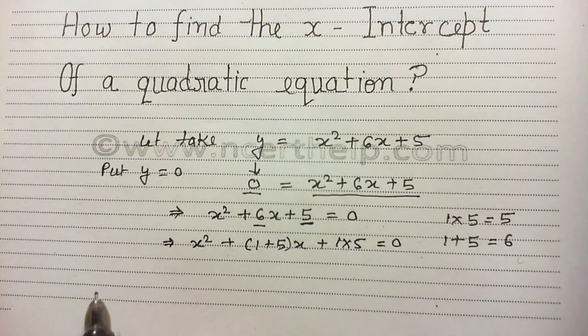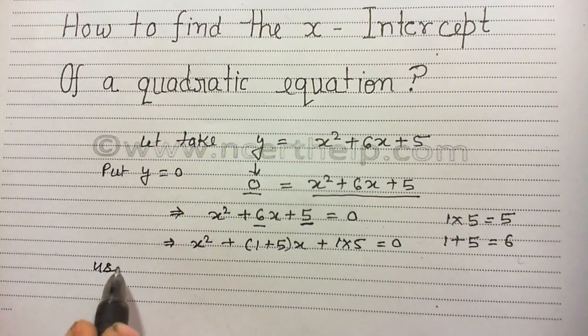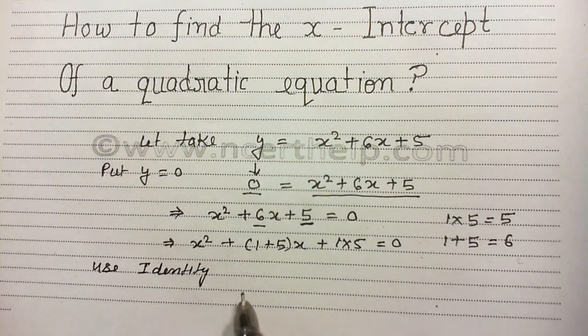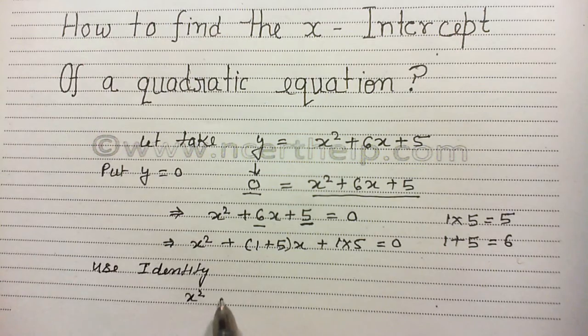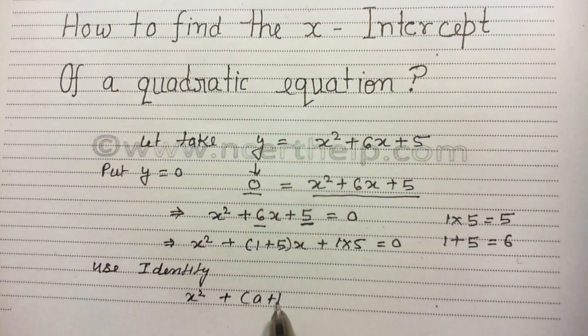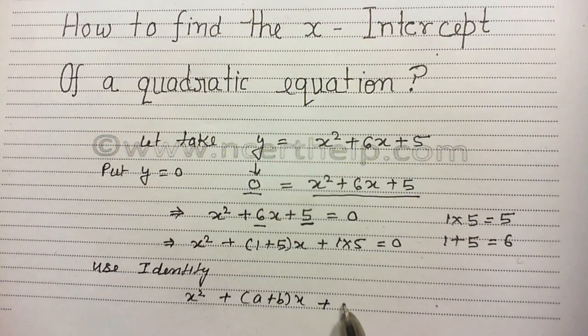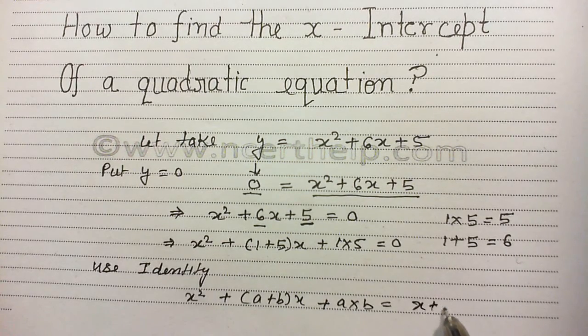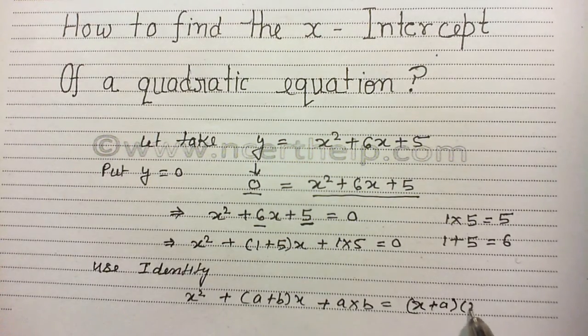Now I can use the identity. Use identity that x square plus a plus bx plus a times b gives me x plus a, x plus b.